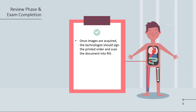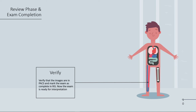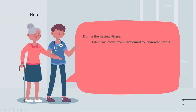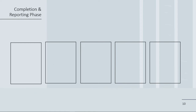Any comments for the exam can be entered in RIS during this stage. Once images are acquired, the technologist should sign the printed order and scan the document into RIS. Once reviewed and confirmed, the technologist will select end in RIS, which sends the images to PACS. Verify that the images are in PACS and mark the exam as complete in RIS. Now the exam is ready for interpretation. During the review phase, orders will move from the performed to the review status once the order information has been validated, images are acquired and validated, and exam comments have been entered and any scanned documents have been attached. Once verified, the order will move to complete status, and the patient will be billed on completion.